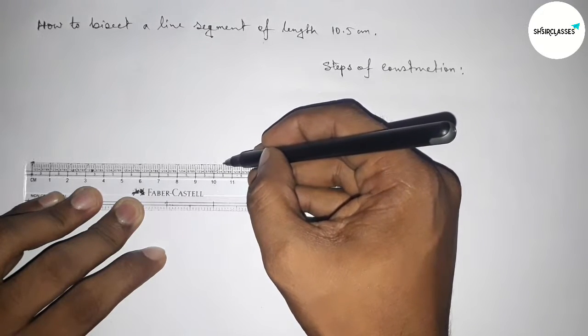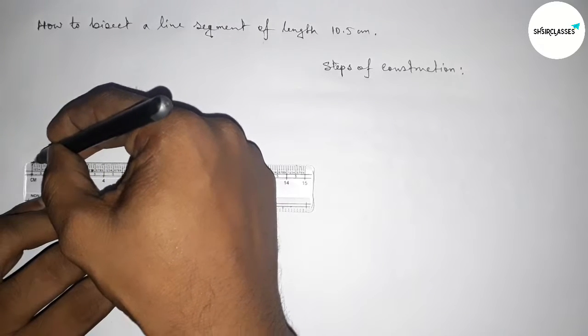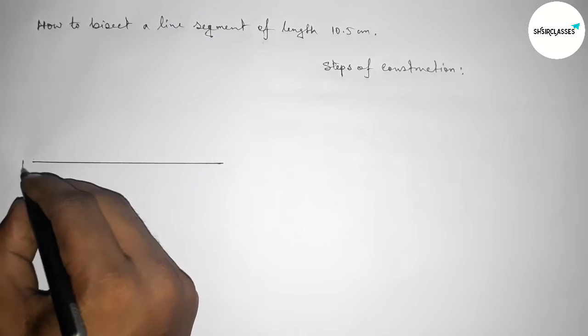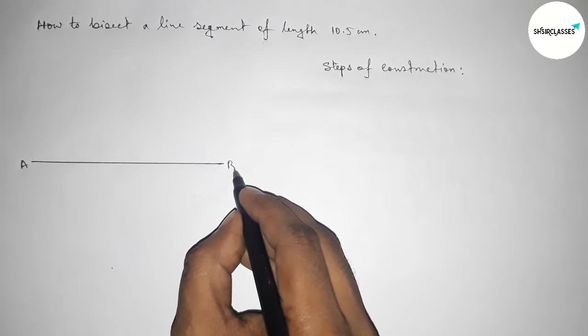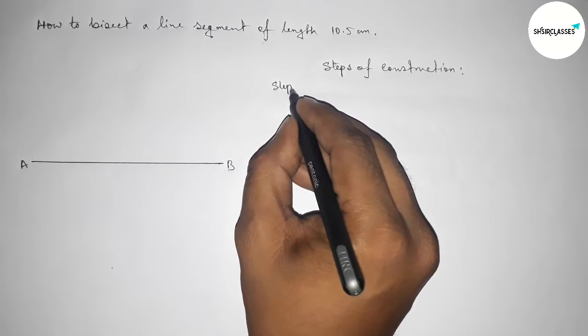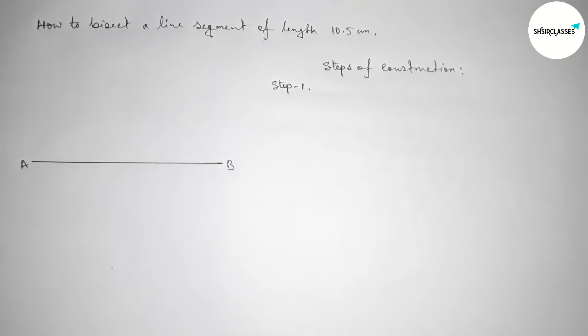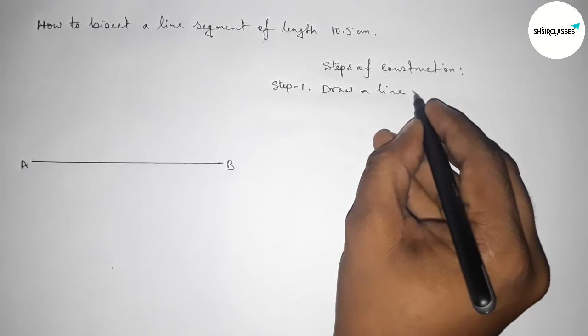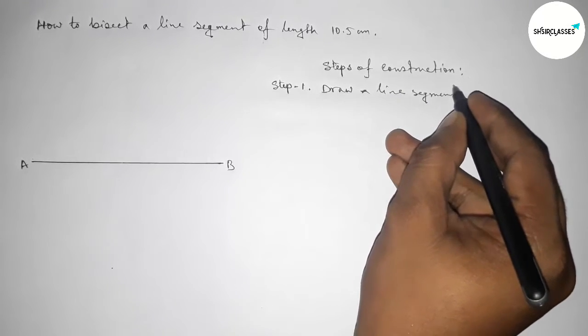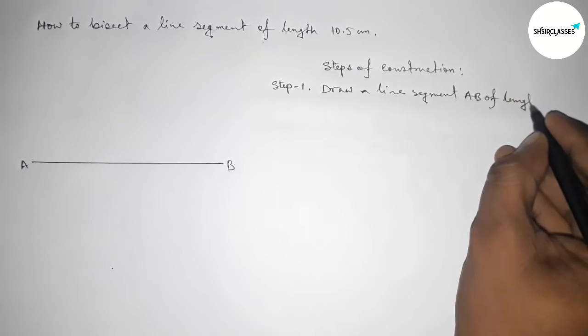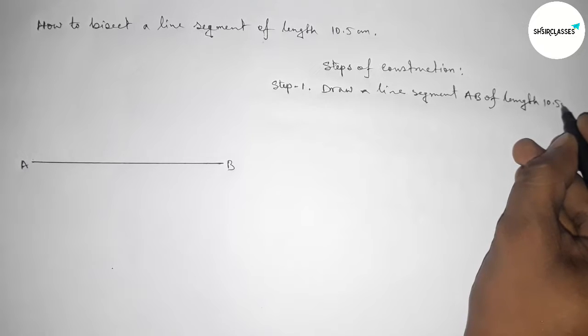Taking here point A and here B. So now step number one. In step number one, we have to first draw a line segment AB of length 10.5 centimeters by using scale.